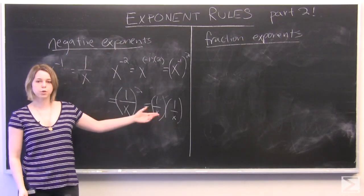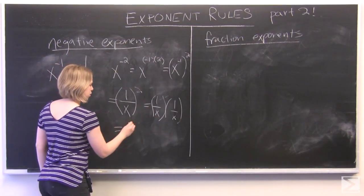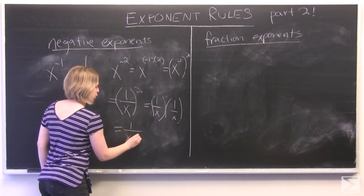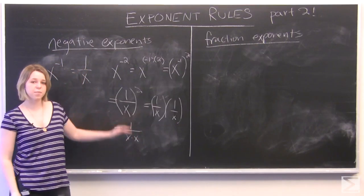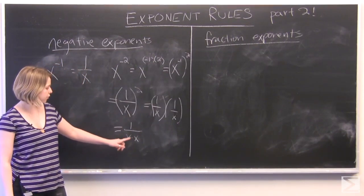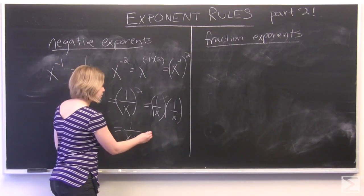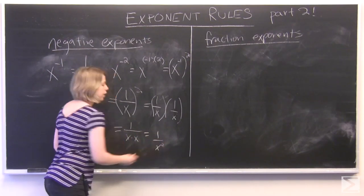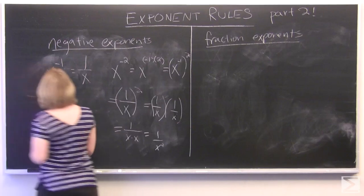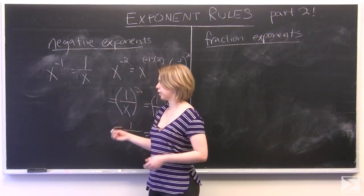When we multiply fractions together, we multiply the top and the bottom separately. So we're left with 1 over x times x. Two iterations of x on the bottom means that this is 1 over x squared. And so we're left with a rule here.